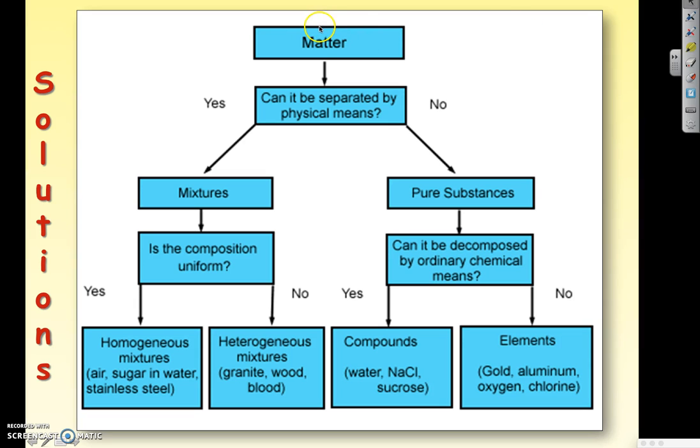Here's just a little reminder of our classification of matter. If it can be separated by physical means, then it's a mixture. And then you look at the actual composition of the mixture. If it is a uniform composition throughout, meaning you can't see all the different components of it, you cannot easily separate them, it's a homogeneous mixture. And homogeneous mixtures are solutions.